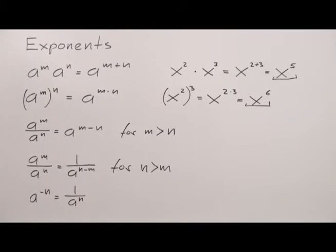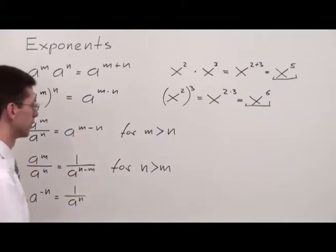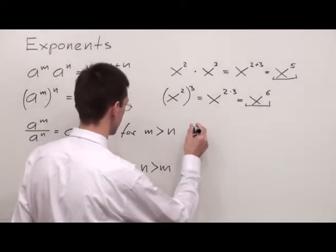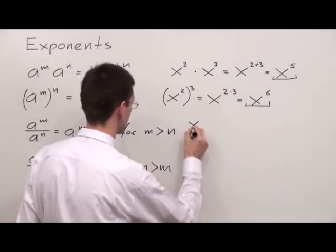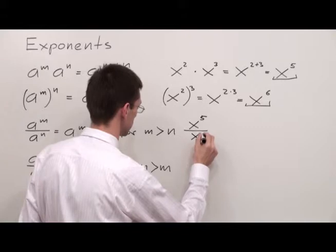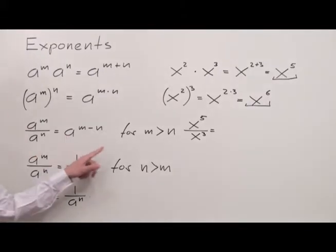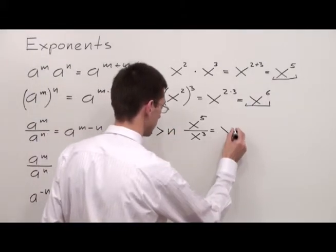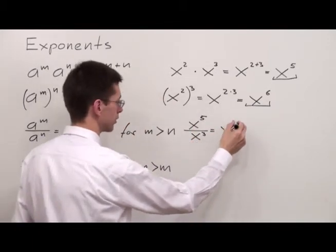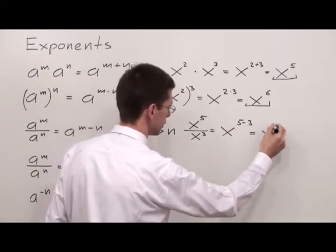The next formula is for division. The formula for division says that anytime we have the same base, we're supposed to keep the base and subtract exponents. So for example, x to the fifth over x to the third — according to the rule I keep the base, which is x, and subtract exponents: 5 minus 3. The answer is x to the second power.